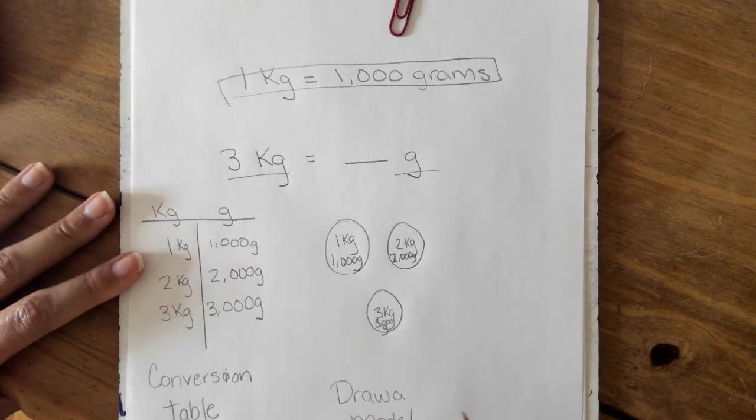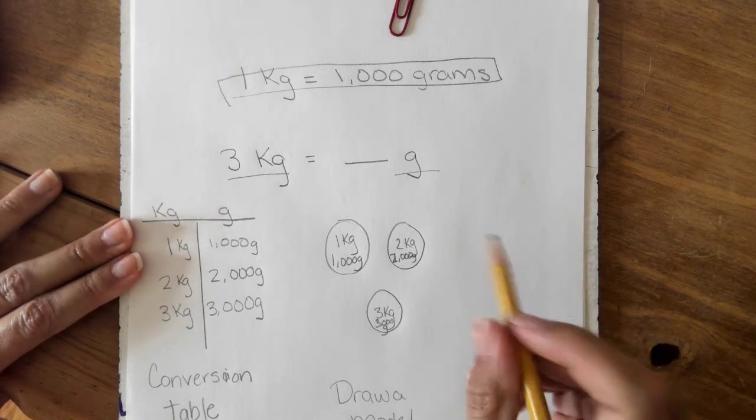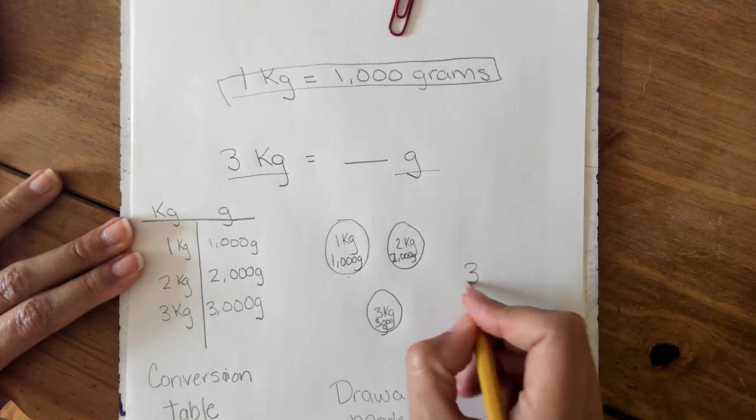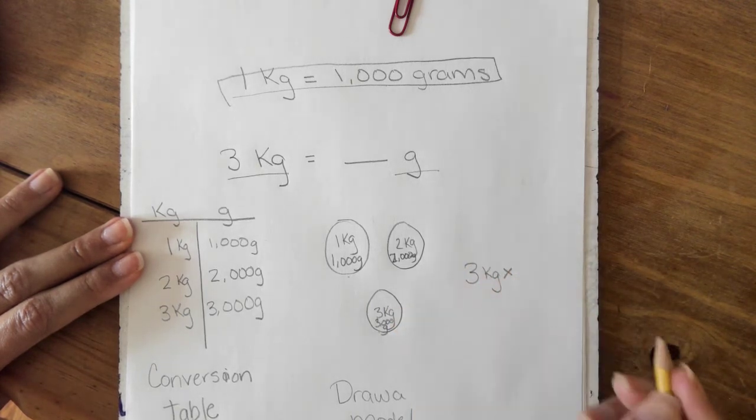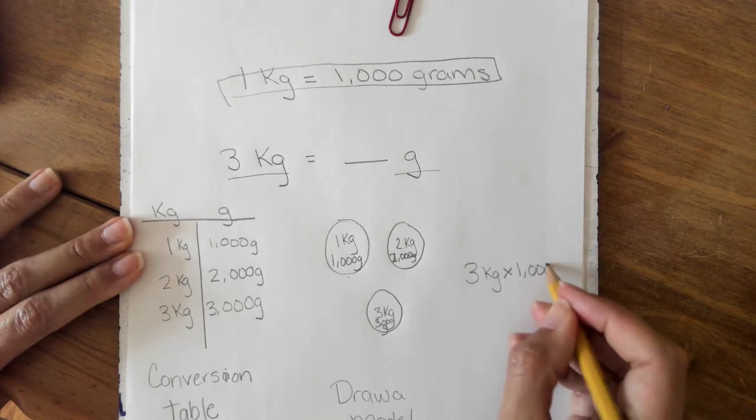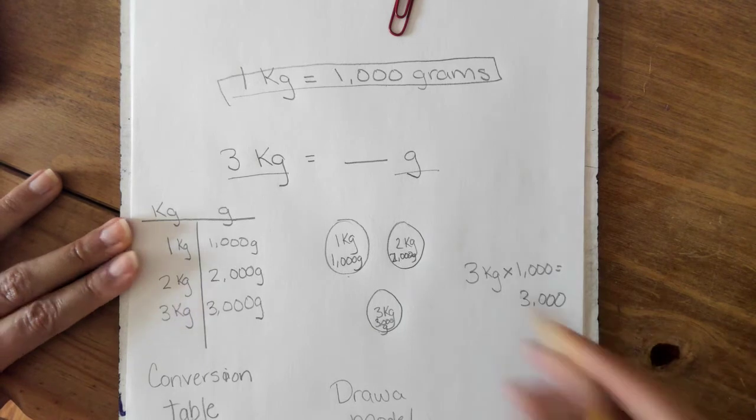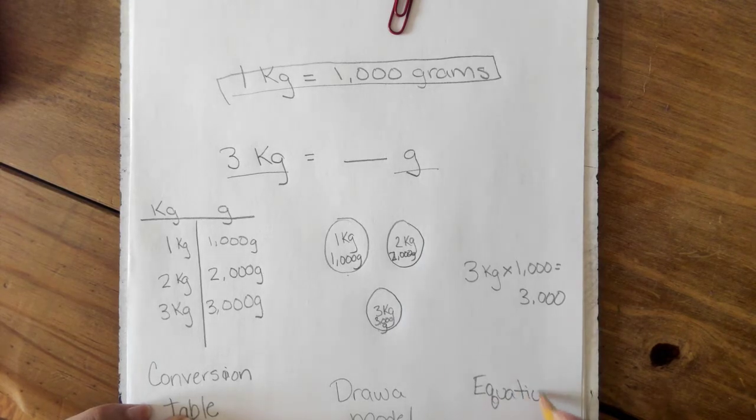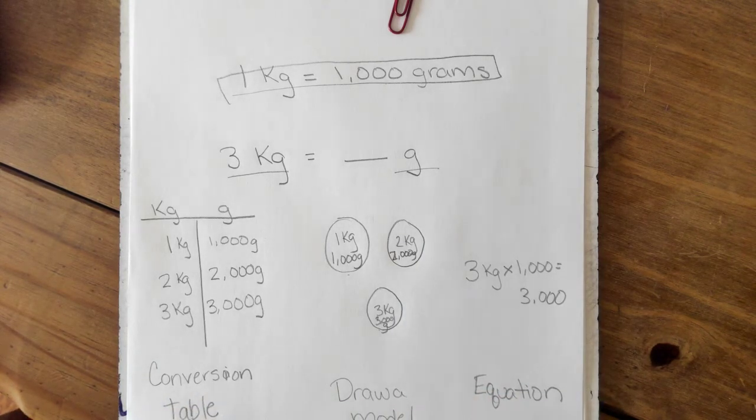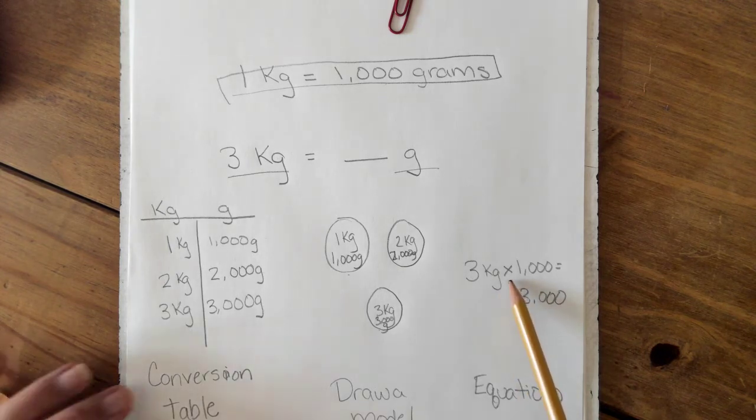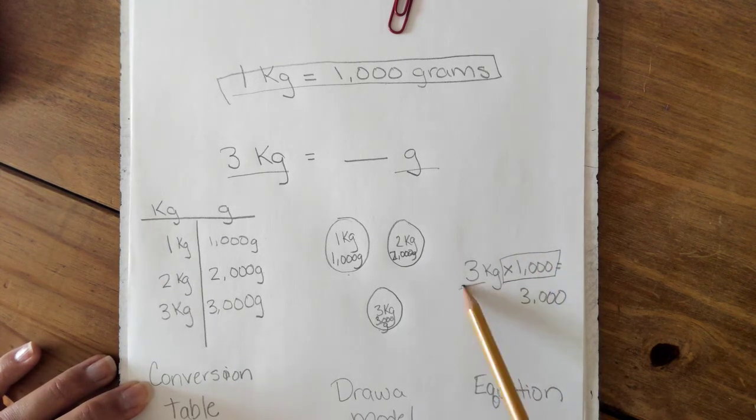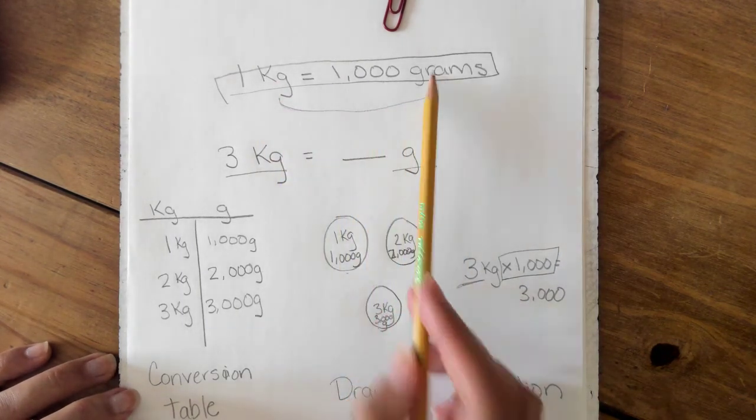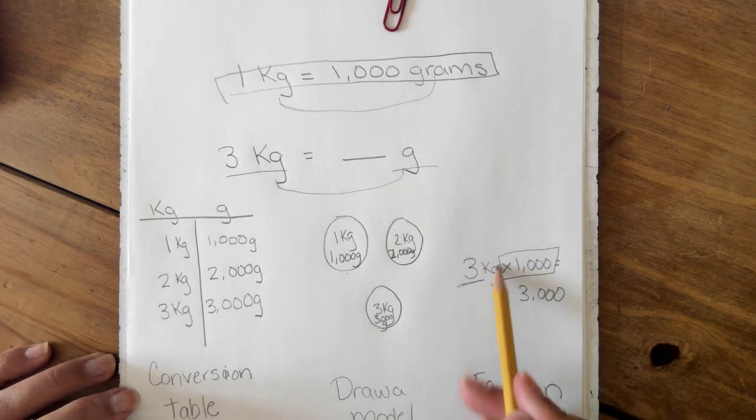So seeing here we have equal groups, again our answer comes out to three thousand. As you can see in both the conversion table and in our model, what we did was we took three kilograms, and that's equal groups of one thousand, which equals three thousand. So that is our last strategy: to use an equation. Here we had to use multiplication because there are one thousand inside of the three groups. Since we're going from a bigger unit to a smaller unit, we're going to multiply.